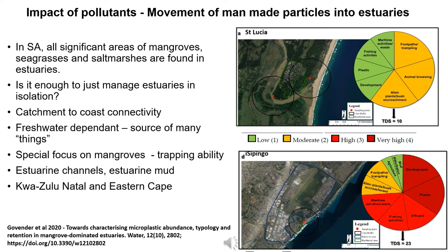In South Africa we have approximately 37 estuaries with mangroves, covering an area of 1,672 hectares. We found a gradient of activities across our study sites ranging from low to moderate at rural or semi-urban systems such as Saint Lucia to very high at urban systems such as Isipingo. For the microplastic study we looked for plastics less than 5 millimeters in the surface water and sediment in estuaries across our coastal zone.